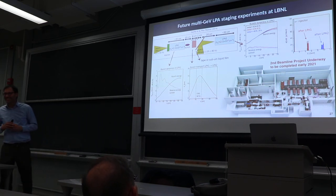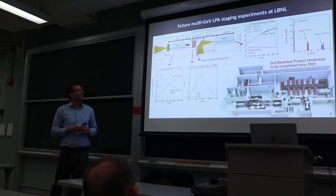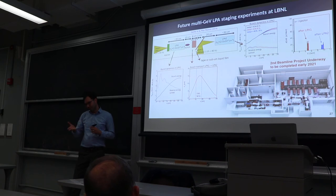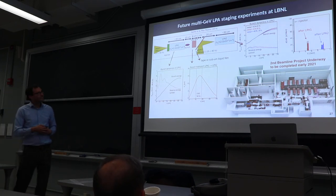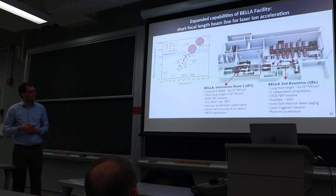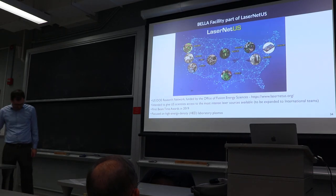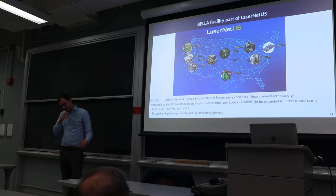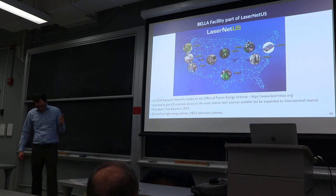This is basic R&D on advanced accelerator concepts at this point, so the applications are still far out in the future. Question: You talked about the network of user facilities—what kinds of users do you get? Answer: This is a very recent development. We had our first users this past year. First beam time was in 2019. We had an experiment to generate x-rays and then do backlighting of a solid target—you pump it and then use the laser plasma accelerator to generate x-rays through betatron emission and probe it. We got two experiments this past year.